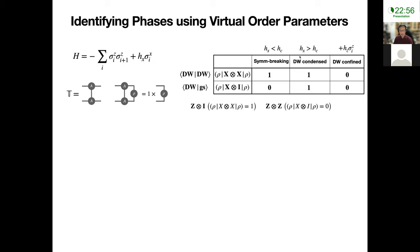We can summarize the phases using this table. In the symmetry breaking phase where the domain wall is well-defined, x⊗x should give identity giving one, and x⊗identity should give zero. In the domain wall condensed phase, the norm is one but the domain wall is the same as the ground state. In the domain wall confined phase, the domain wall is not well-defined, so both are zero. Using this, I can distinguish topologically non-trivial phases where I can create a domain wall from topologically trivial states.